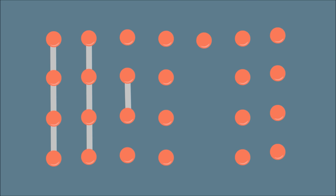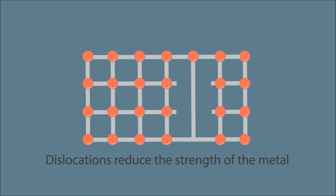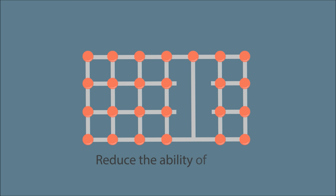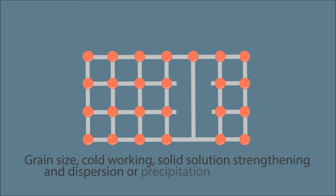Strengthening mechanisms. In the introduction to materials module, we talked about dislocations being present in metals. These dislocations reduce the strength of the metal. The principle of strengthening mechanisms is to reduce the ability of these dislocations to move through the metal. This can be achieved by: reduction in grain size, cold working, solid solution strengthening, and dispersion or precipitation strengthening. These mechanisms can be applied individually or in combination.